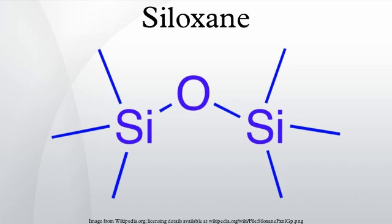With a disilanol, R₂Si(OH)₂, the condensation can afford linear products terminated with silanol groups, or alternatively the disilanol can afford cyclic products. Starting from trisilanols, cage structures are possible, such as the species with the formula (RSiO₁.₅)ₙ with cubic and hexagonal prismatic structures.